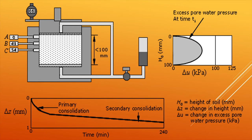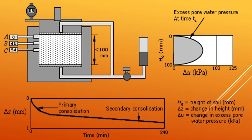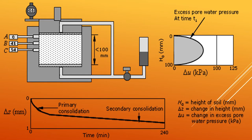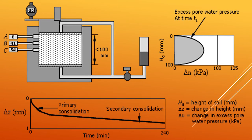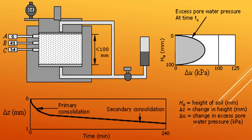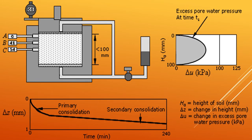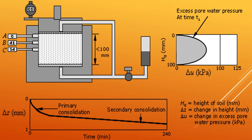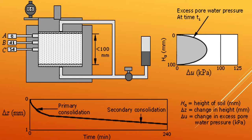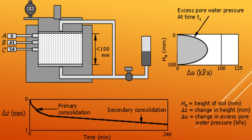The test is conducted on a 100 mm thick soil sample. The excess pore water pressure at time T is measured. H0 is the height of the soil in mm, delta Z is the change in height in mm, and delta U is the change in excess pore water pressure in kPa. The time lag ranges from 0 to 240.